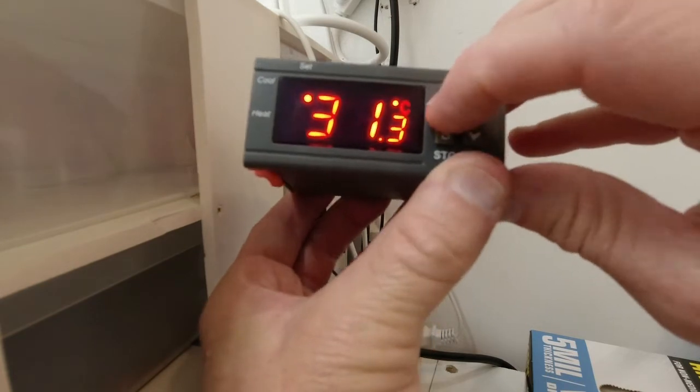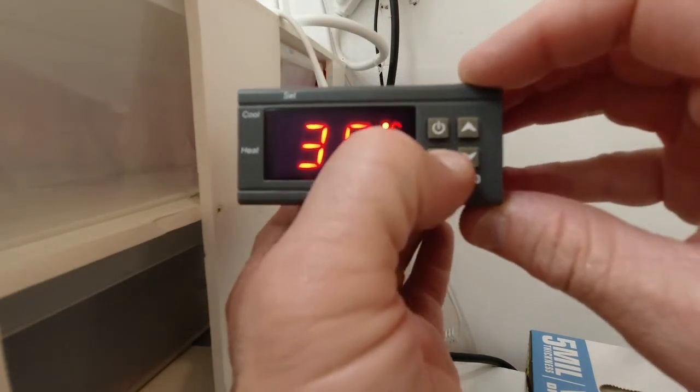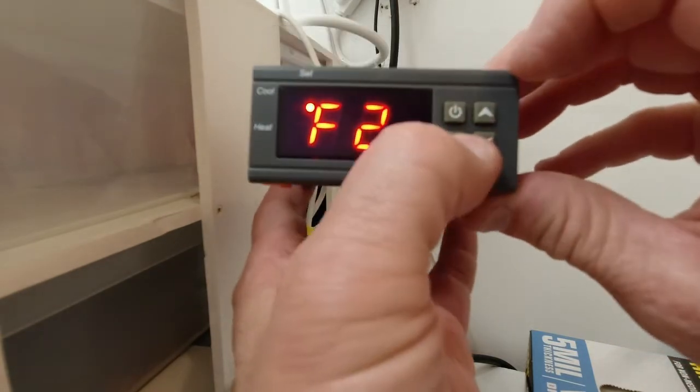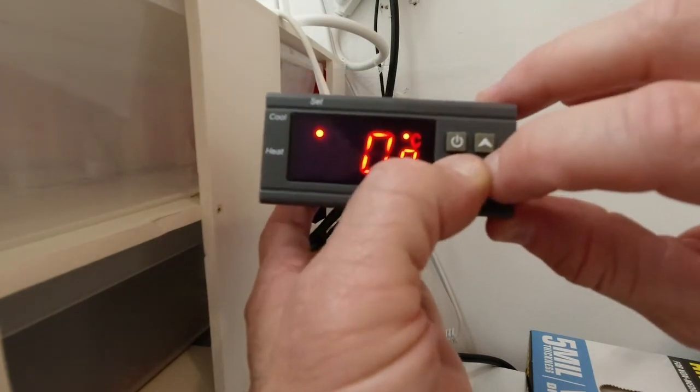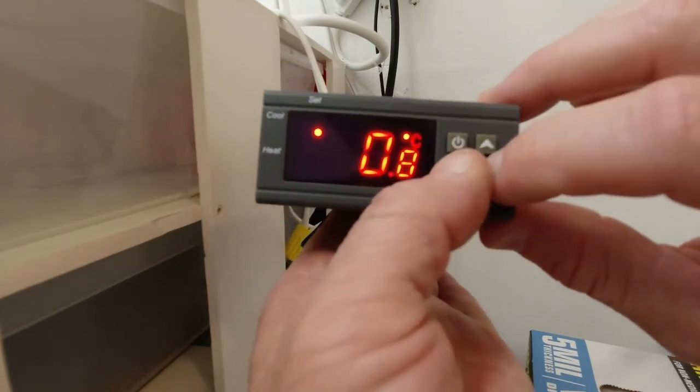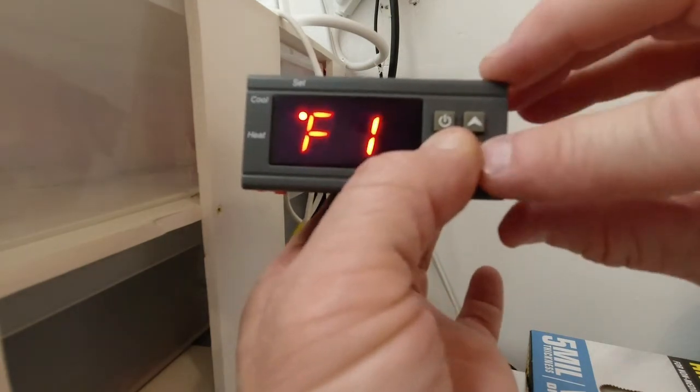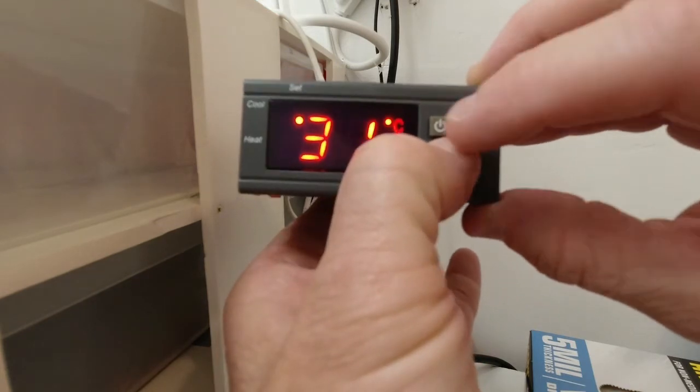And then we hold down S again, this pops up, we go up to F2, and we hold S. And this thing pops up, and that is how much degrees of difference it will be. So if you wanted this thing to be 31.1 degrees, see we have it on 31.3, so it's kicked on.